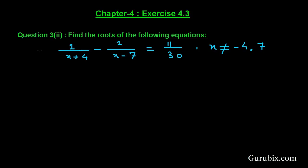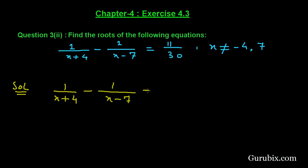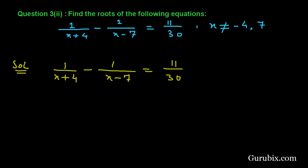Let us see how to solve this question. First, we collect the given equation: 1 over (x plus 4) minus 1 over (x minus 7) equals 11 over 30, where x is not equal to minus 4 and 7. This means the roots of the equation will be other than minus 4 and 7.